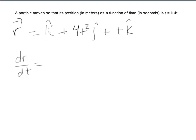Now there's a 1 here. We know that the derivative of a constant is 0. Derivative of t with respect to t is just 1.